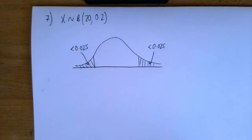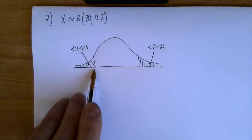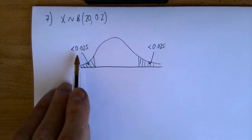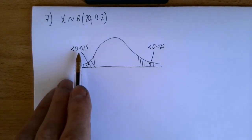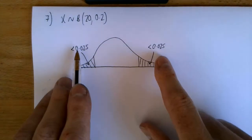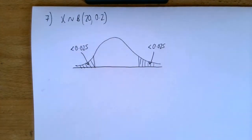with a 5% level of significance, we try to find critical values here and here so that the value of the probability is less than 0.025, because we split our 5% between the top and the bottom tail.